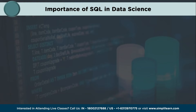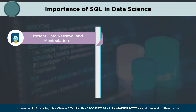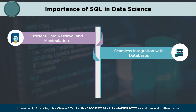Let us now understand the importance of SQL in data science. The first reason is efficient data retrieval and manipulation. SQL is designed specifically for managing and querying structured data in relational databases. It provides a powerful set of commands and functions that enable data scientists to retrieve, filter, aggregate, and manipulate large volumes of data efficiently. Secondly, SQL enables seamless integration with databases. SQL is a standard language for interacting with relational databases. Most organizations store their data in databases such as MySQL, PostgreSQL, Oracle, or SQL Server. Being proficient in SQL allows data scientists to seamlessly connect to these databases, extract data, perform complex queries, and integrate results into data science workflows.